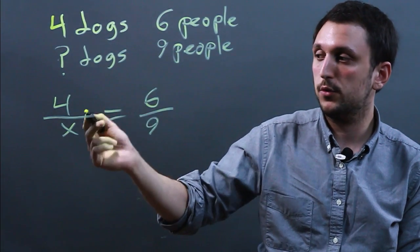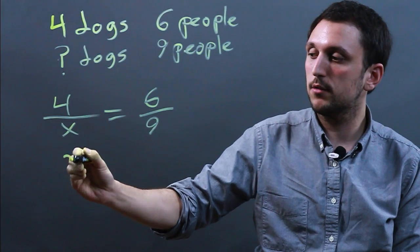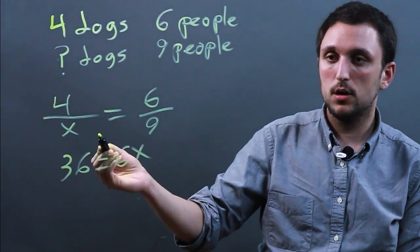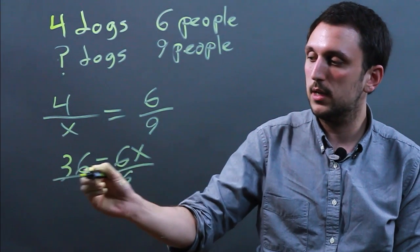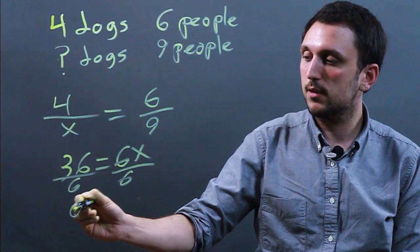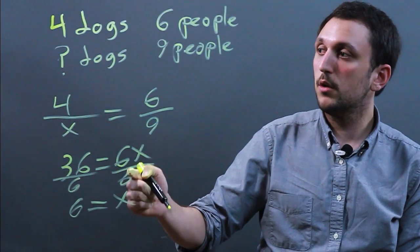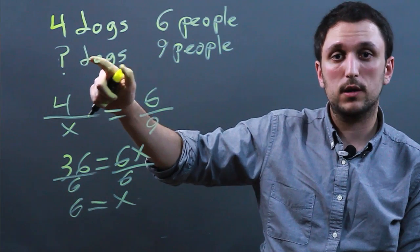So now we would cross multiply. Four times nine is 36 equals 6x. So then we divide by six on both sides and we get six equals x. So if there are nine people, there are six dogs.